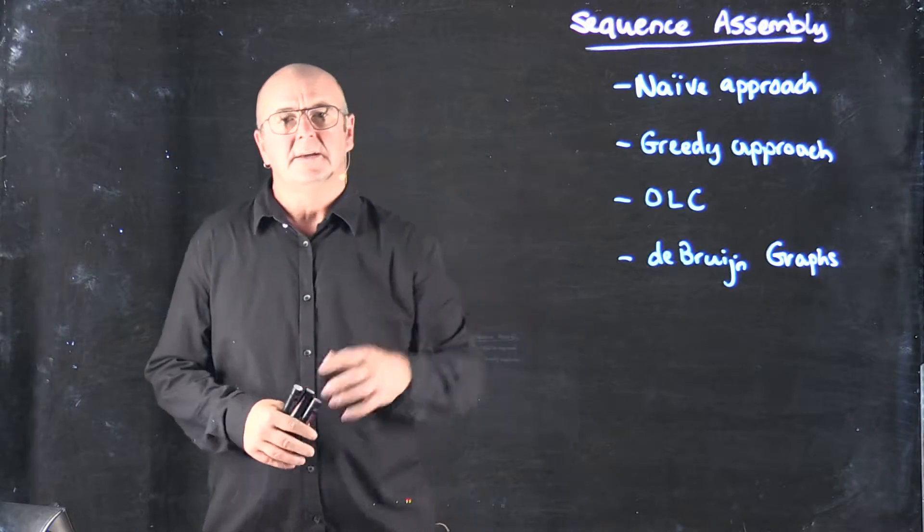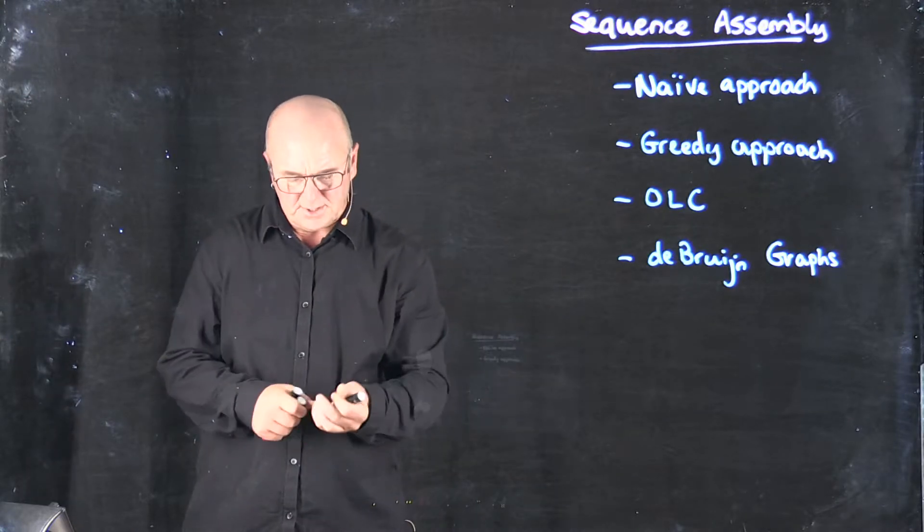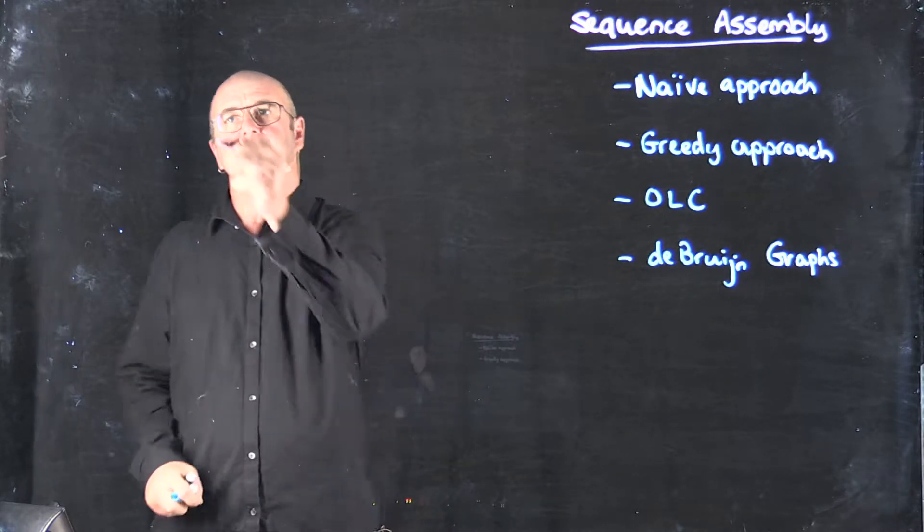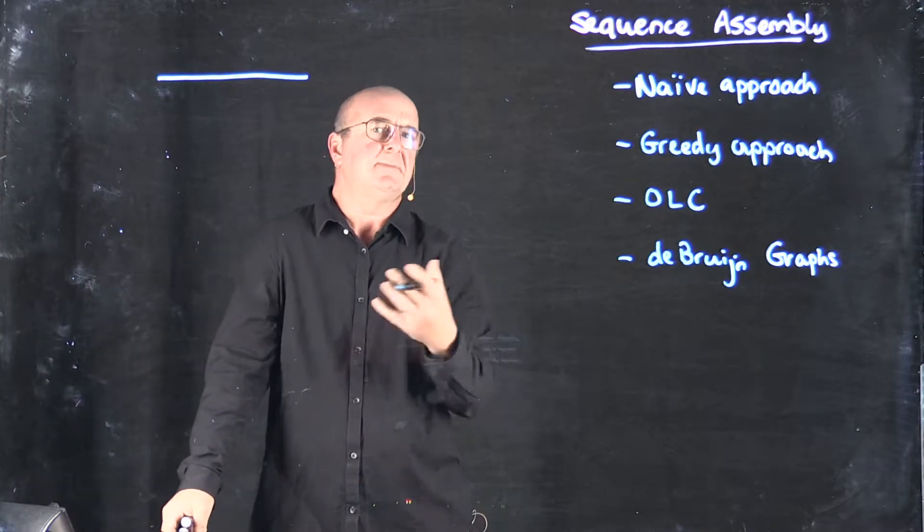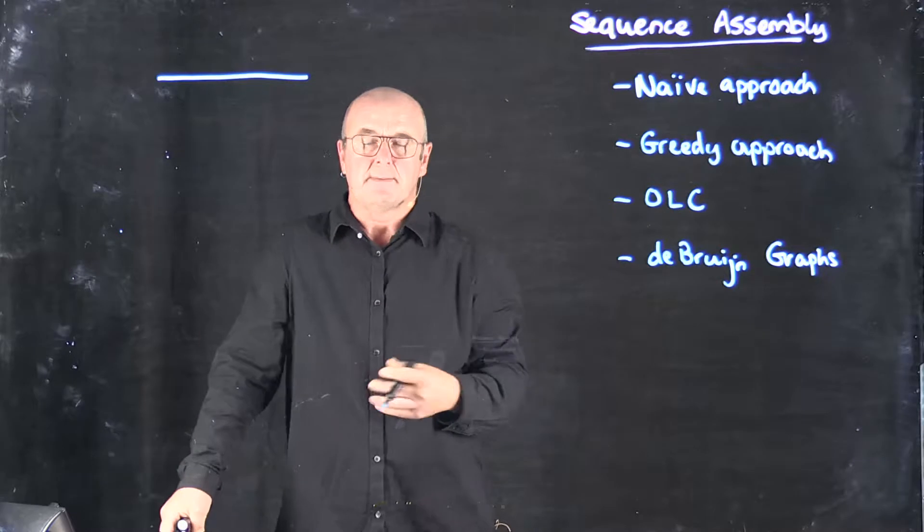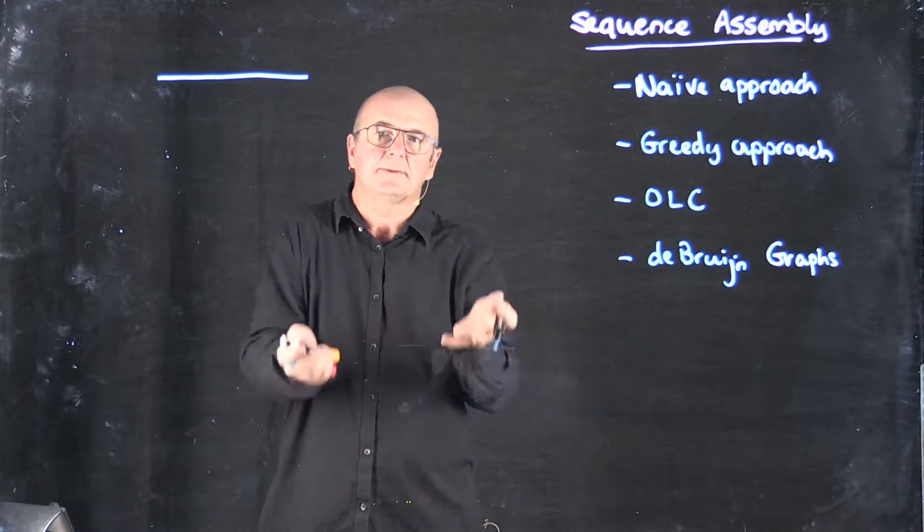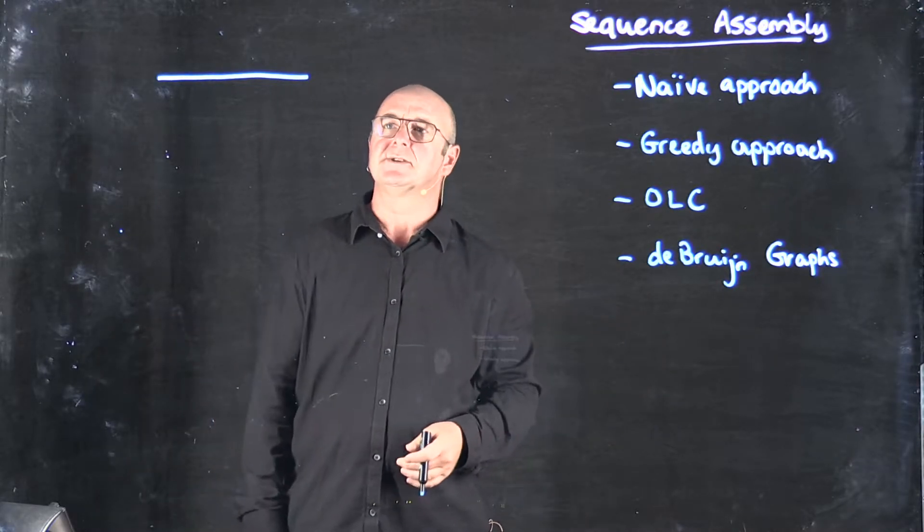The next approach to think about is what's called the greedy approach. The greedy approach is that you choose one sequence at random out of your file - maybe it's the first sequence in the file, maybe it's the middle sequence, maybe it's the last sequence, whatever, it doesn't matter. You basically choose one at random.